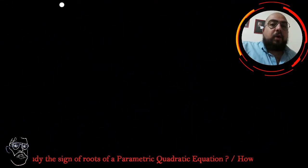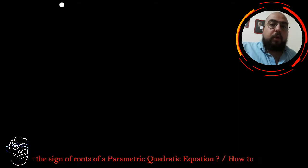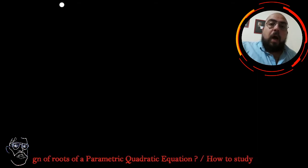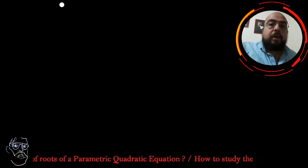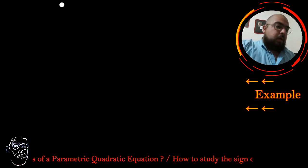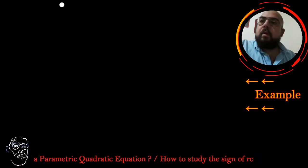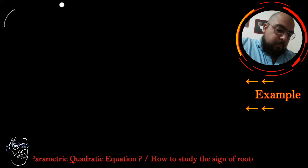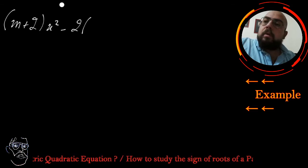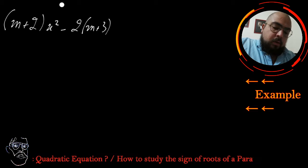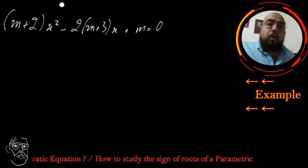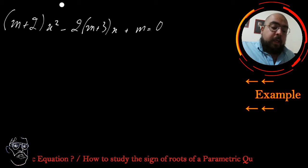Hello, Naregis here. Today we're going to talk about parametric quadratic equations, and we're mostly interested in studying the sign of its roots. I'm going to take one example and study the sign of roots of this parametric quadratic equation. The example is: (m+2)x² - 2(m+3)x + m = 0. As you can see, this is a parametric quadratic equation where the coefficient a is also parametric.